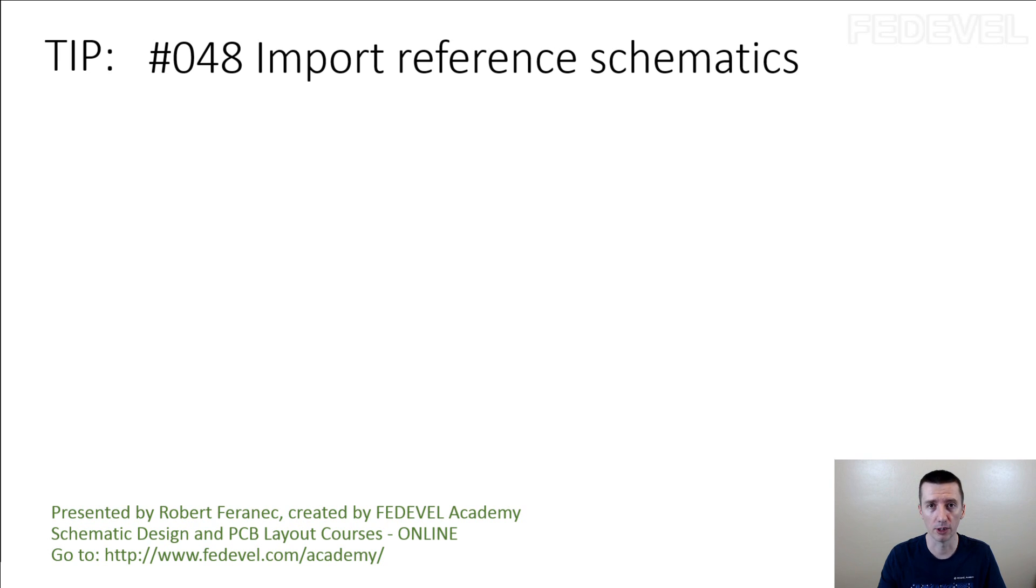Many times you cannot get the source file. Okay, but just ask. If you cannot find source file of the schematic which you would like to use in your project, ask the chip manufacturer, ask the sales representative of the chip manufacturer and usually they will send you the DSN file, the source file of the schematic, because they would like to sell you the chips so they will support you.